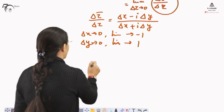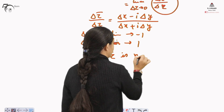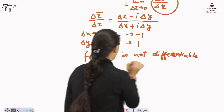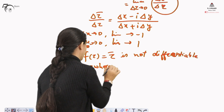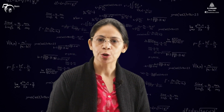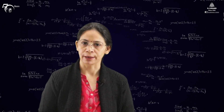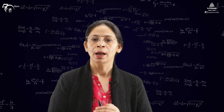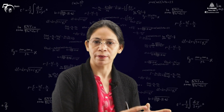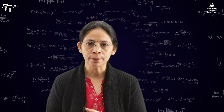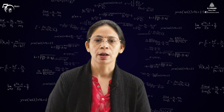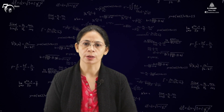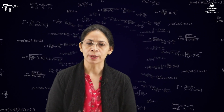Therefore, f(z) = z̄ is not differentiable anywhere, because the limit on the right-hand side of the derivative does not exist. The function f(z) = z̄ is not differentiable because it approaches different limits when the components δx and δy are taken to 0 separately. For δz to tend to 0, both δx and δy must tend to 0 simultaneously.